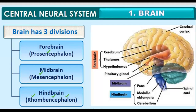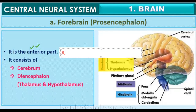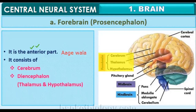Now we are going to proceed to the next part. The forebrain is the anterior-most part of the brain. It consists of two parts: the cerebrum and the diencephalon. The diencephalon is made up of two parts — the thalamus and the hypothalamus — and these together make up the forebrain.